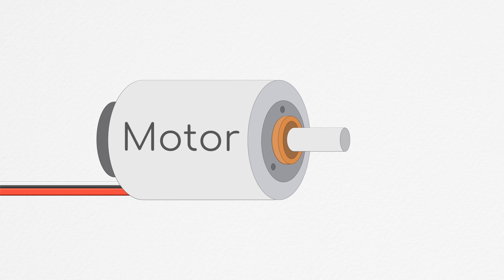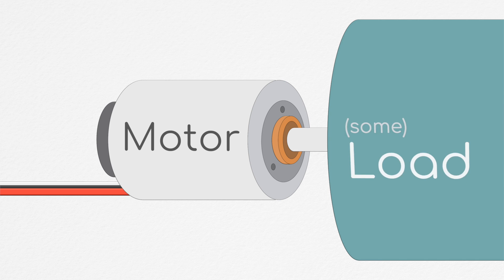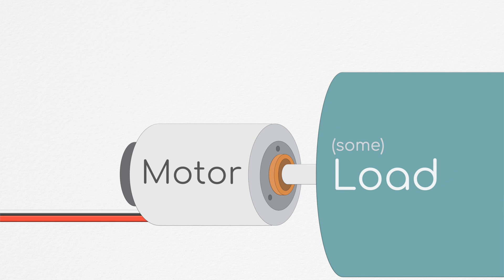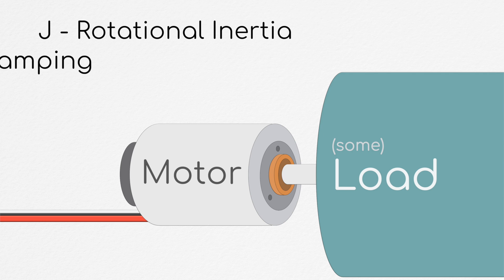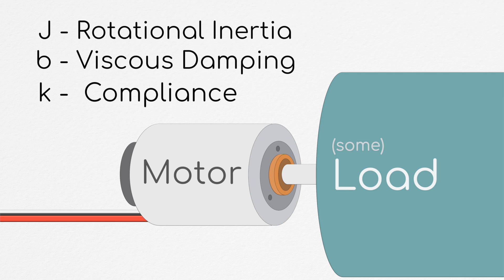We're going to start this episode by taking a look at the mechanical system that is a motor driving some load. We're going to assume that the system will have some rotational inertia J, and some viscous damping which is linear with velocity and characterized by a damping constant B. For this second, we're going to assume that the rotational compliance between the driven load and the motor is negligible.